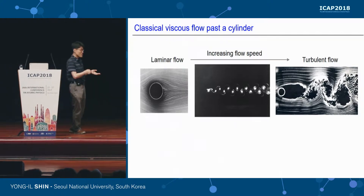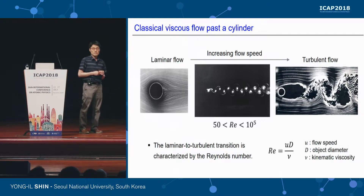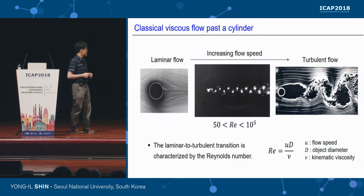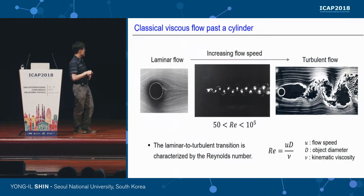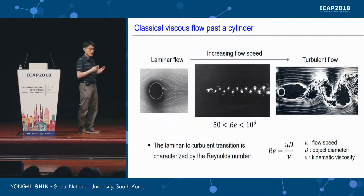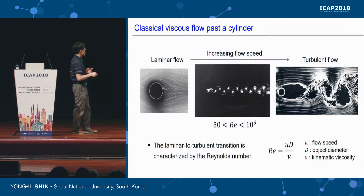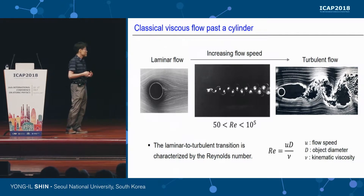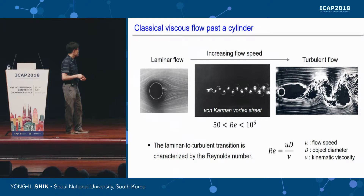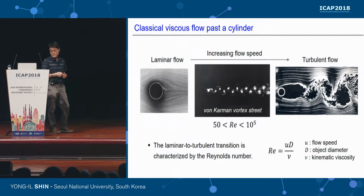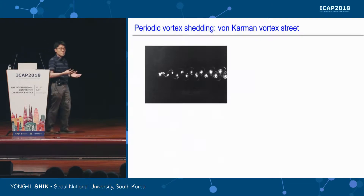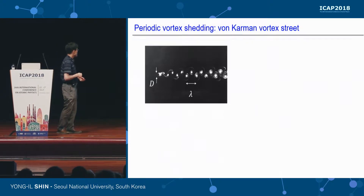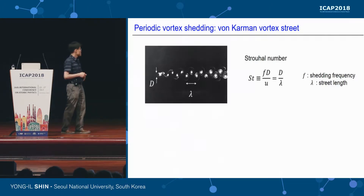This kind of laminar-to-turbulent flow transition is well characterized by the so-called Reynolds number in classical fluid dynamics. In the middle region you have a nice periodic vortex shedding regime, which is a key distinctive feature of this laminar-to-turbulent transition. This periodic vortex shedding is known as the von Kármán vortex street. People also found a very interesting feature: the relation between object size and vortex spacing, characterized by a dimensionless parameter called the Strouhal number, which is the ratio d over lambda.